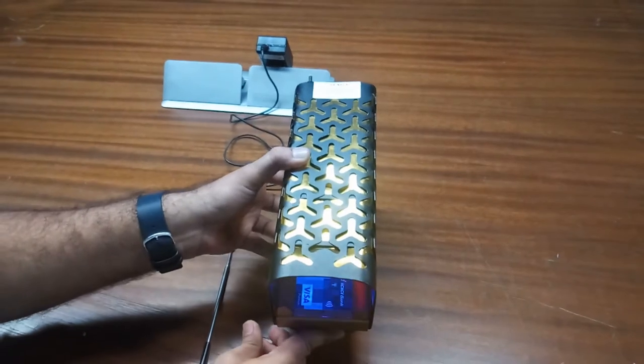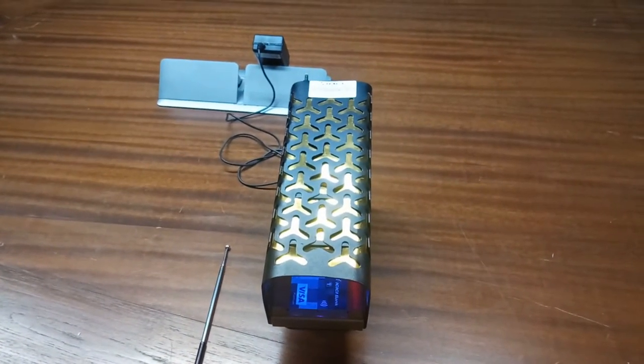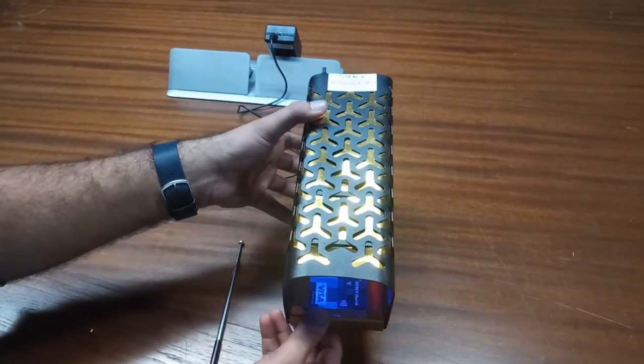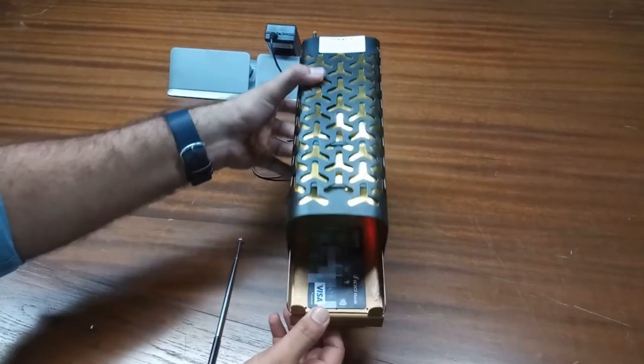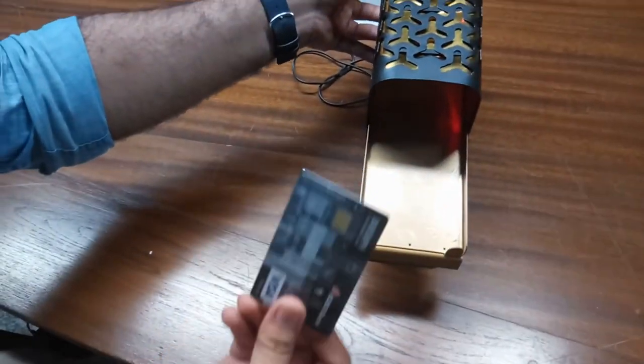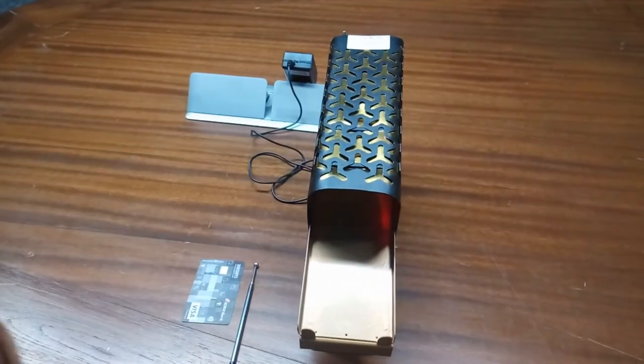You will see the UV lights are working. These UV lights are continuously working until the machine is reopened. Now you can see the card is clean and will be used for payment.